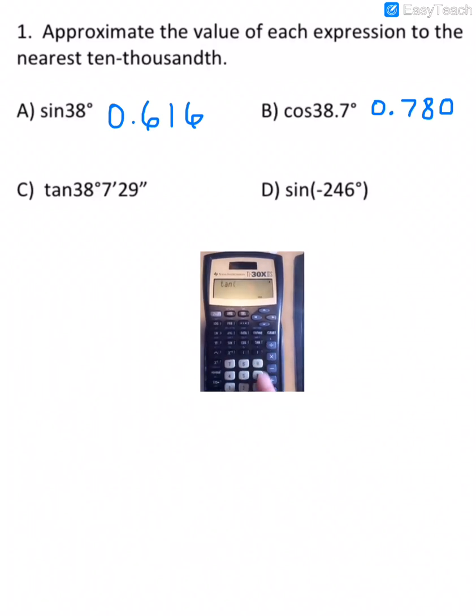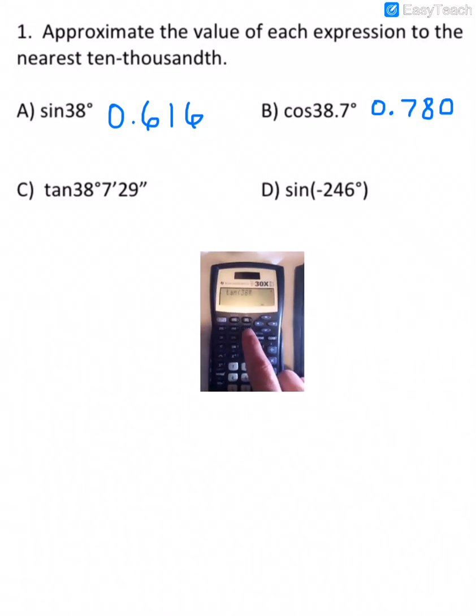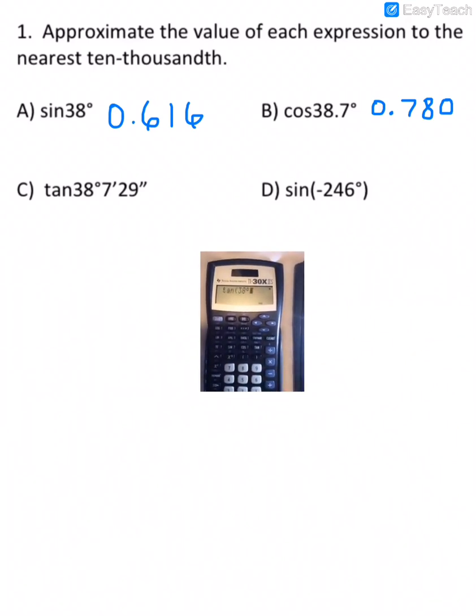If we press tangent and then 38, there is a little button here that's got the degree mark, the minute mark, and the second mark on it. So if I press it once and hit enter, that's the degree. And then 7.